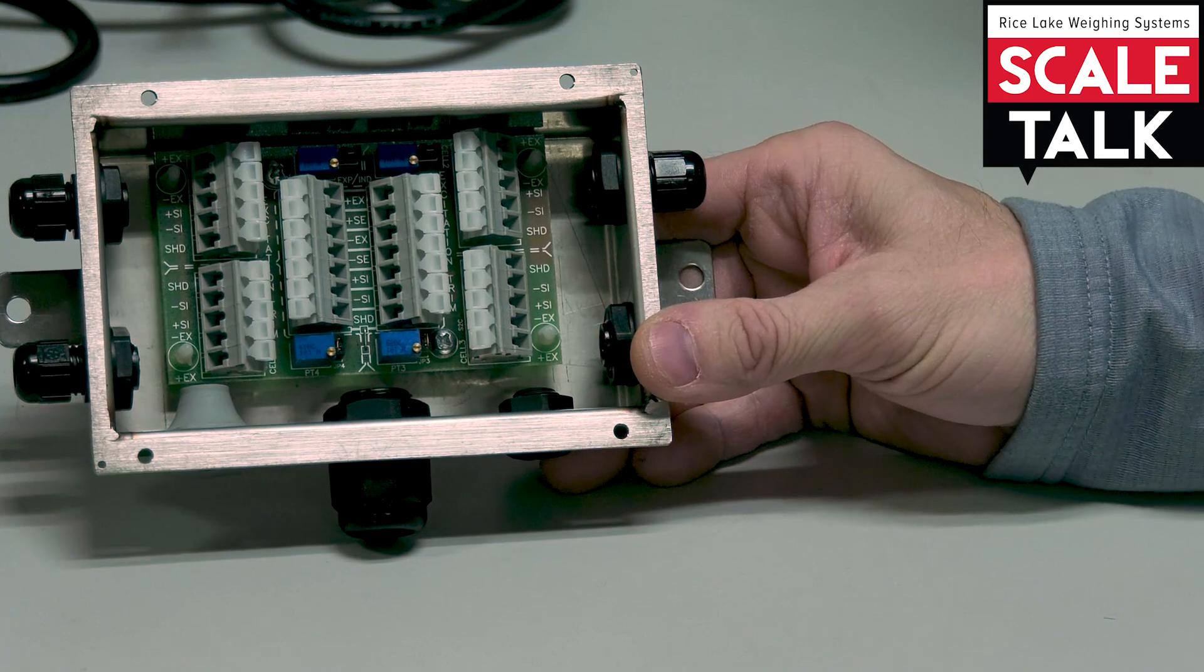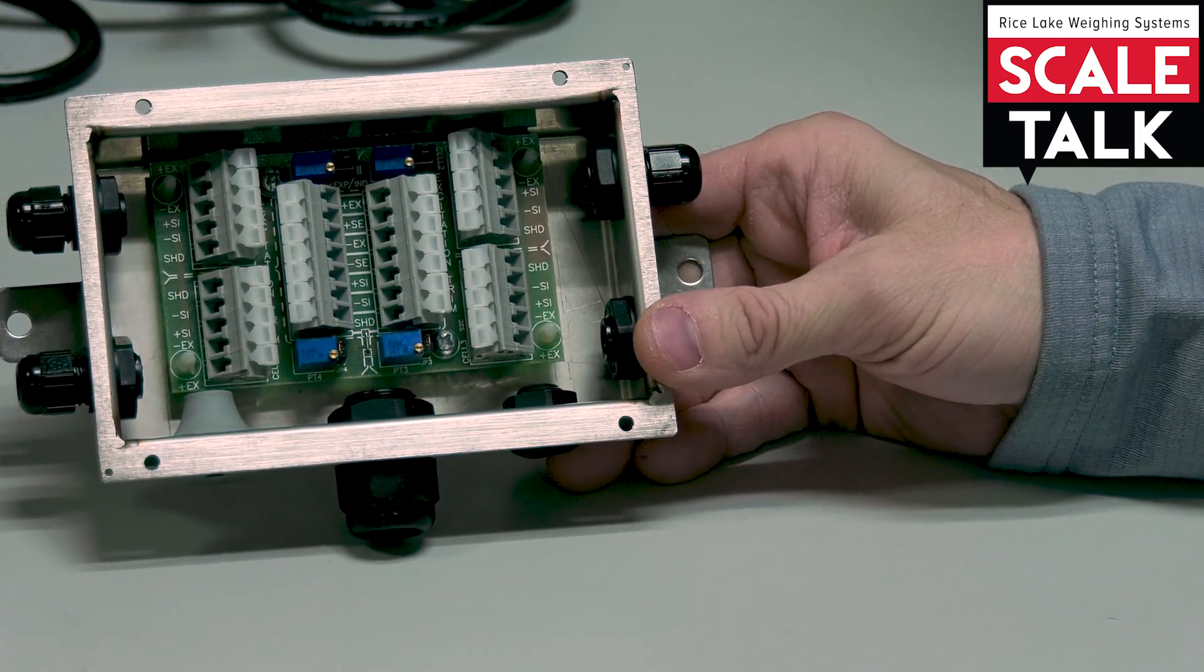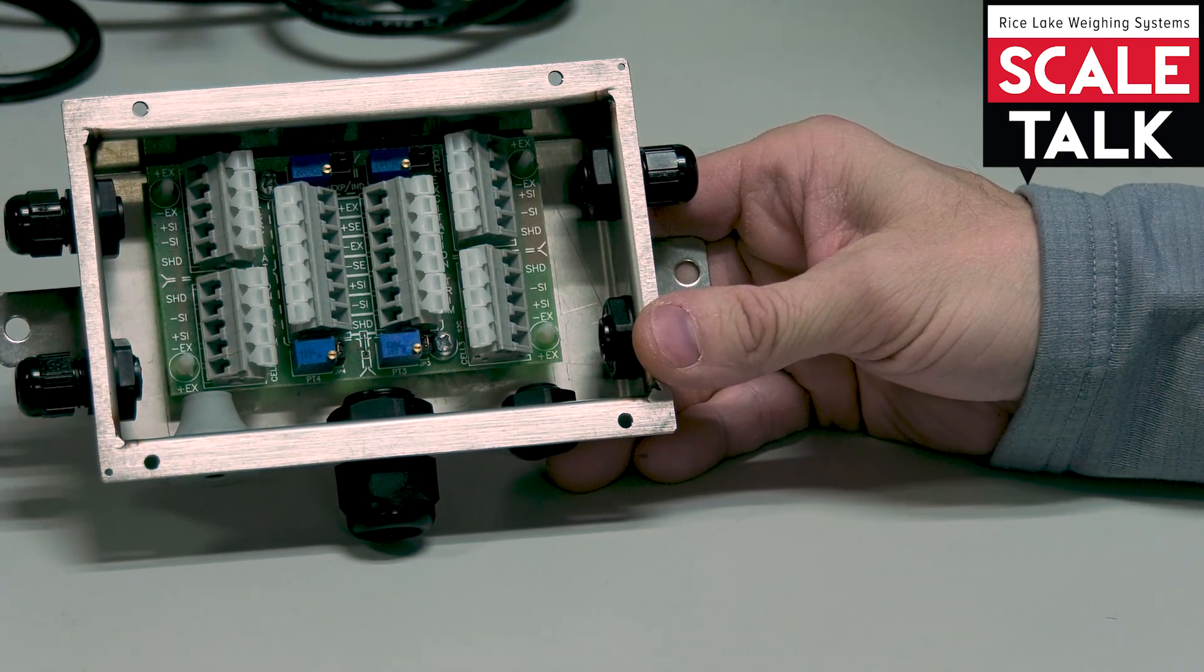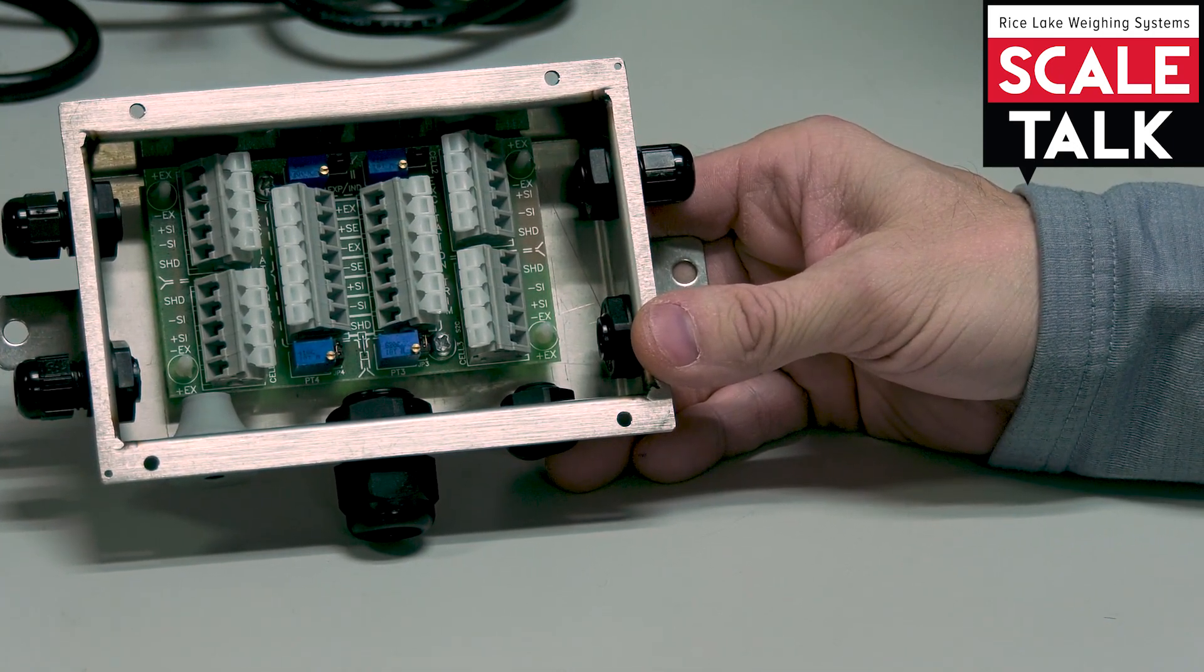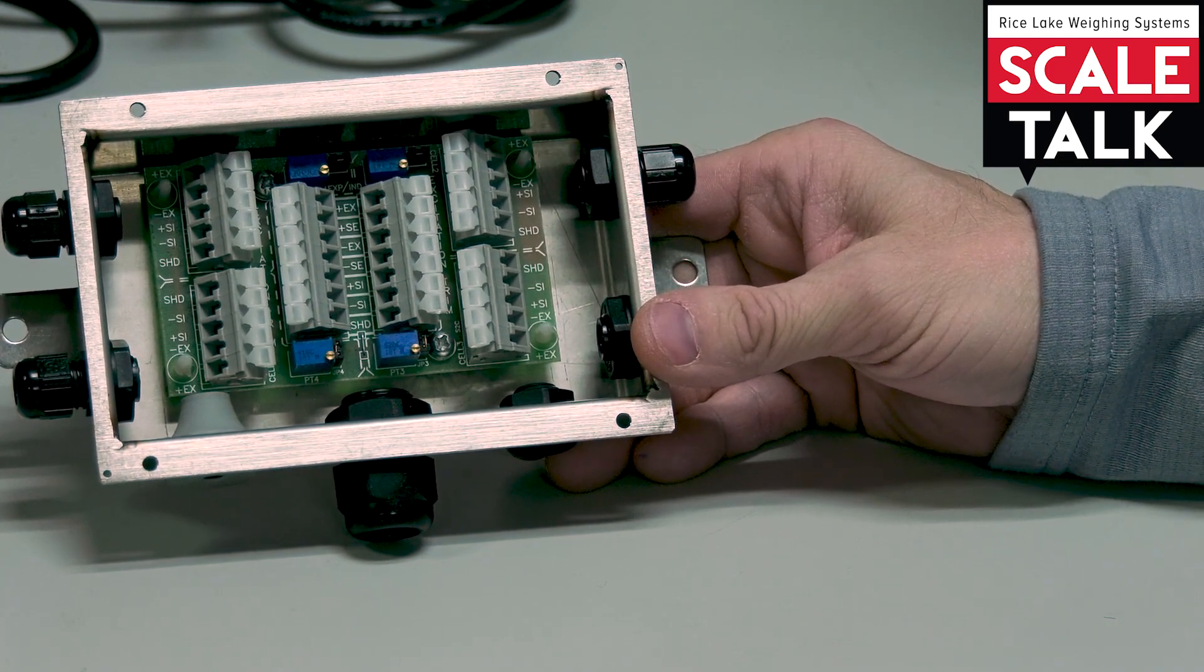Now there are four major purposes that we can get from a J-Box that are worth noting. Two of them are major purposes, one we just talked about, and that is to sum or bring all of these load cells together to function as a single system.